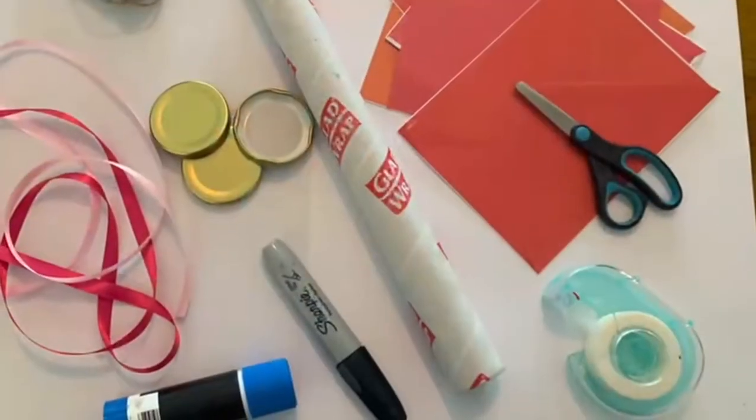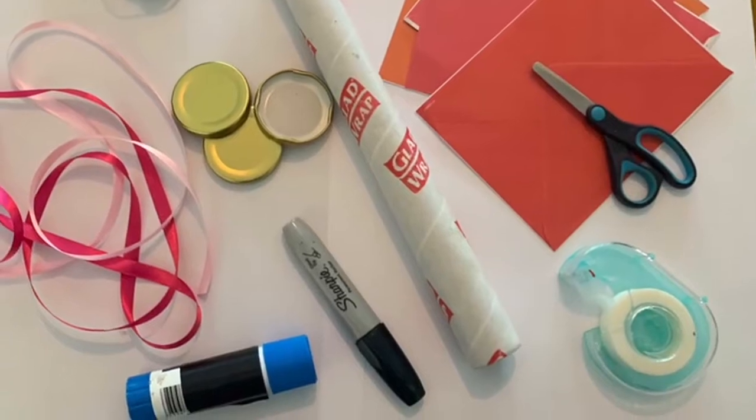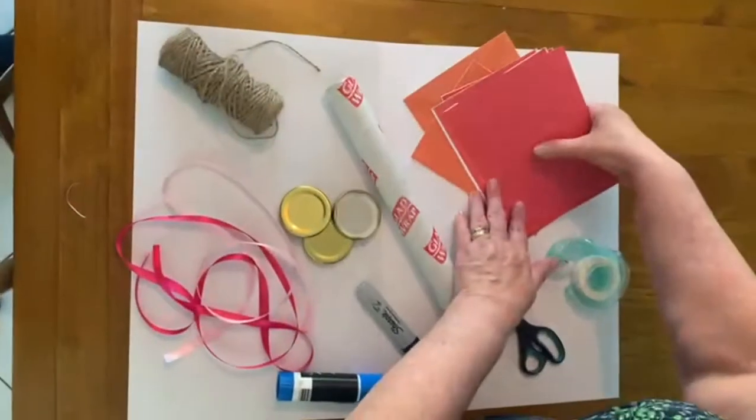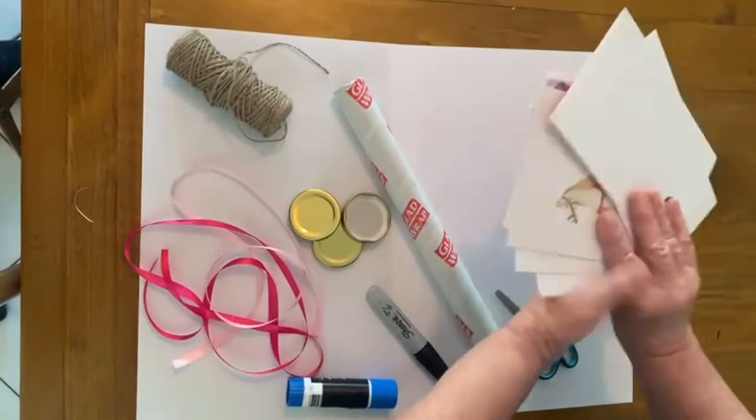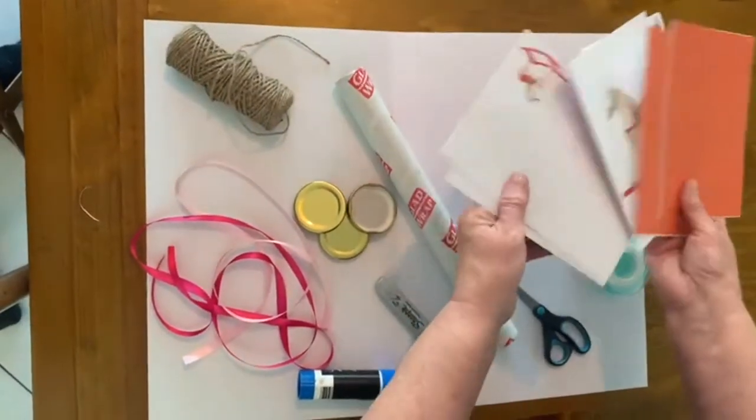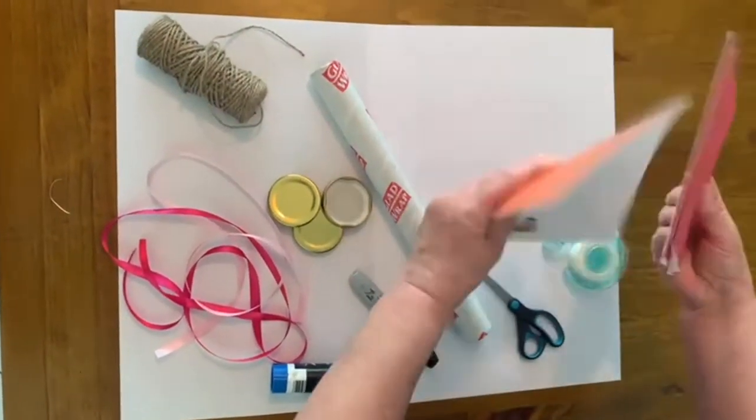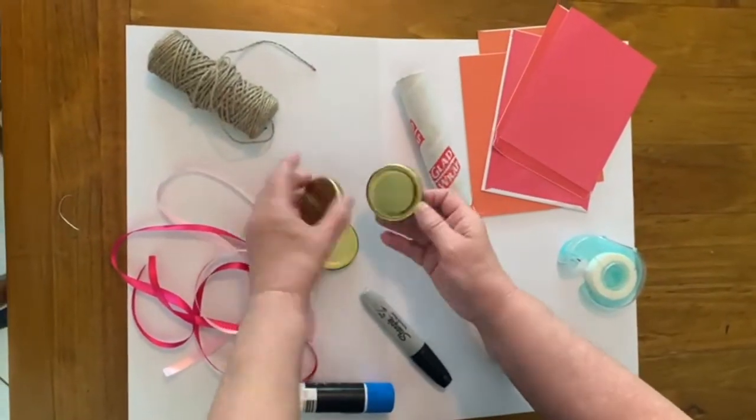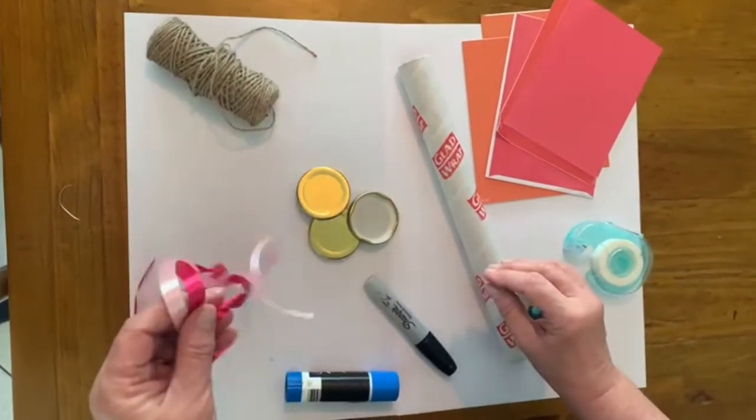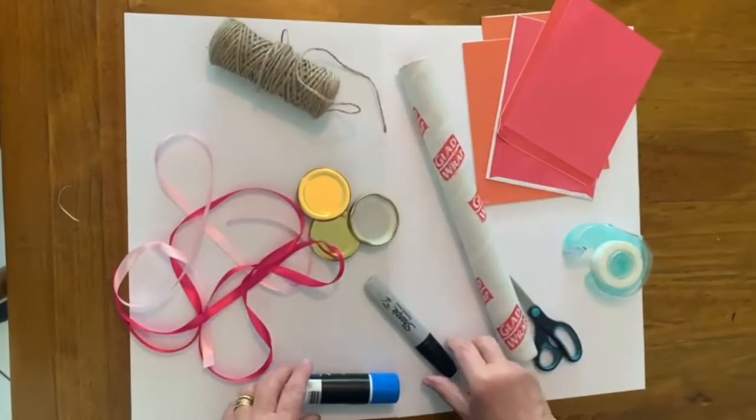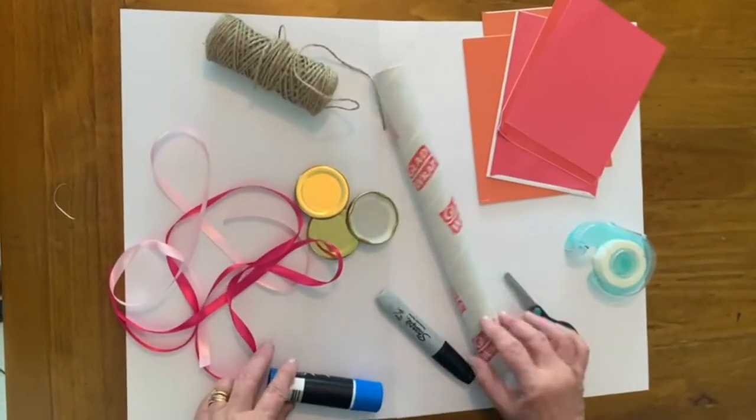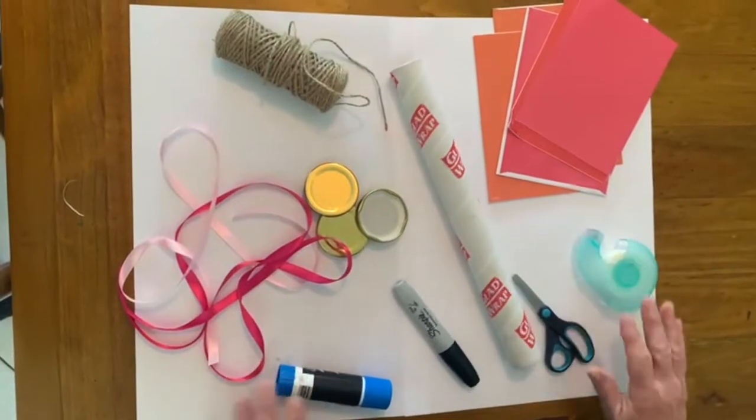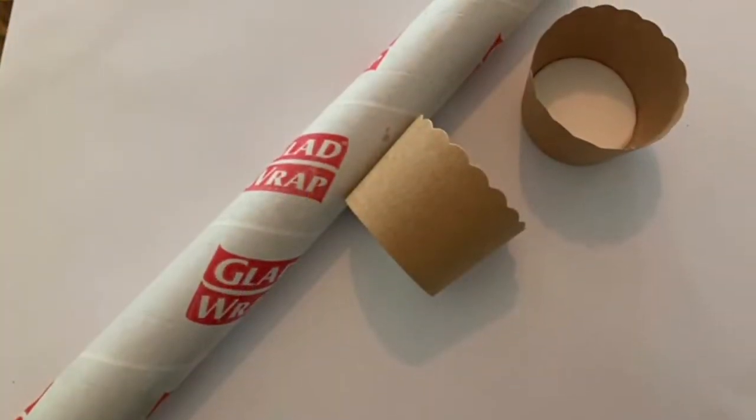Here we have all the materials we're going to use. I've got some old cards to use for my torch or you could use some orange or red paper that you have at home, a nice roll and some jar lids for my medals, ribbons or you could use string. Your equipment is glue, scissors and sticky tape.